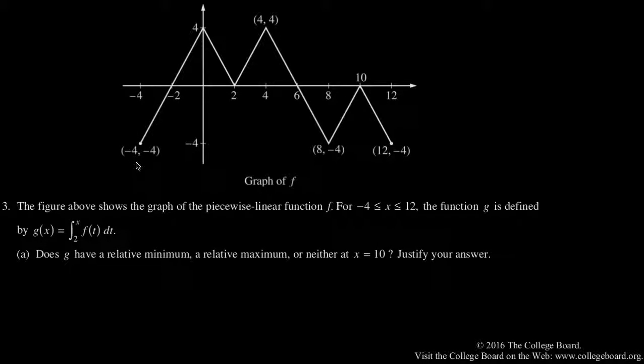2016 AP Calculus AB and BC question 3 part a. The figure above shows the graph of a piecewise linear function from x equals negative 4 to x equals 12.